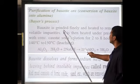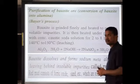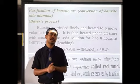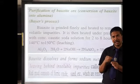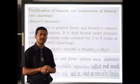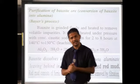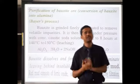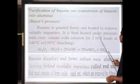Bauxite is ground finely and heated to remove volatile impurities. Volatile impurities are impurities that can be removed simply by heating. Volatile substances are those that vaporize easily on heating — for example, nail polish is volatile. So volatile impurities can be removed by simply heating the ore.